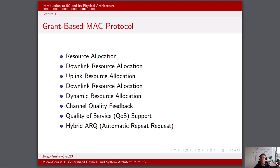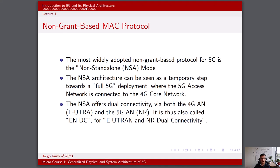The grant-based MAC protocol can adapt dynamically to changing network conditions. The scheduler can adjust resource allocations in real time to accommodate varying demands and optimize network performance. In contrast to grant-based MAC protocols, non-grant-based MAC protocols operate without a central scheduling entity. Instead, they rely on contention-based access methods where devices compete for access to the transmission medium. In non-grant-based MAC protocols, devices contend for access by transmitting data packets whenever they have information to send, resulting in a contention period where multiple devices may attempt to transmit simultaneously. Collisions can occur when multiple devices transmit simultaneously; non-grant-based MAC protocols incorporate mechanisms to detect and resolve these collisions, such as carrier sensing and exponential backoff.